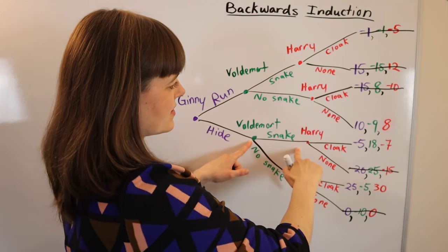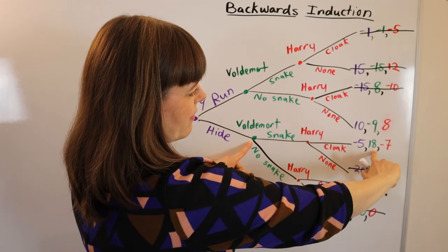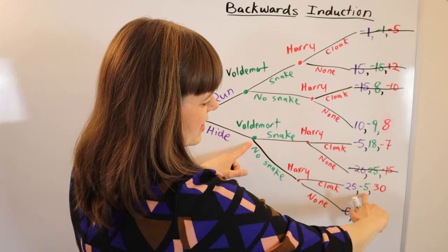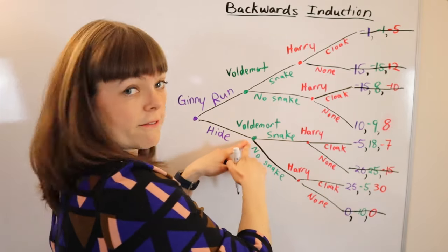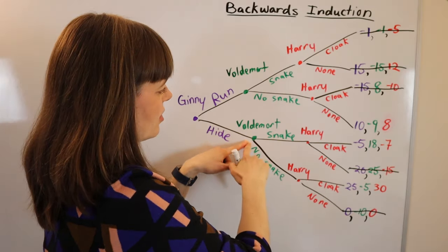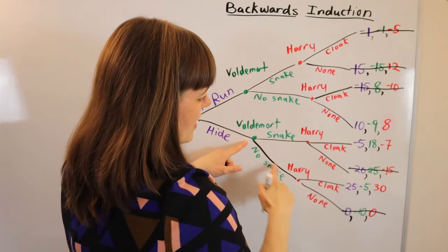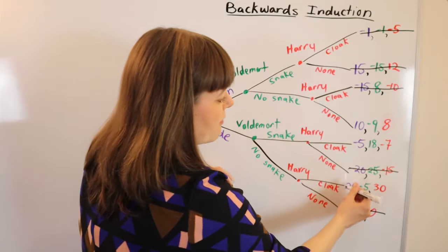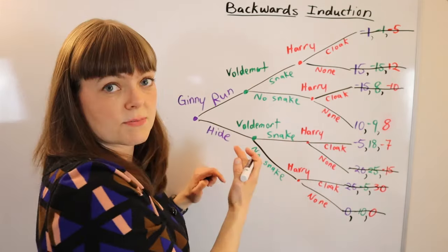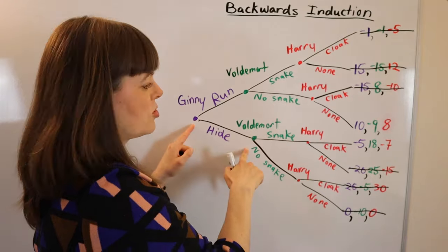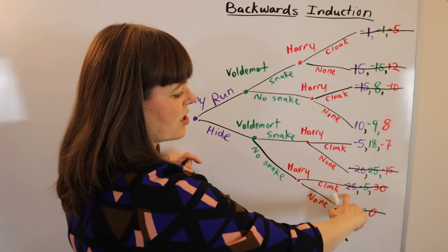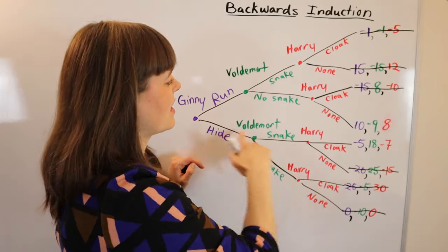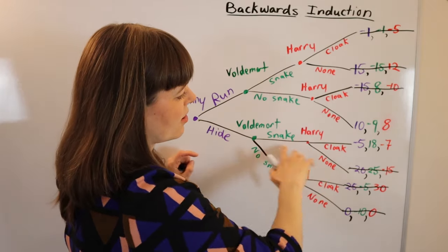At Voldemort's other node: if he brings his snake he gets 18, if he doesn't he gets negative 5. So Voldemort will choose to bring his snake here, meaning the no-snake branch will never be reached. Even though this was Jenny's favorite end node, using backwards induction she knows that if she chooses hide, Voldemort will always bring his snake in response.